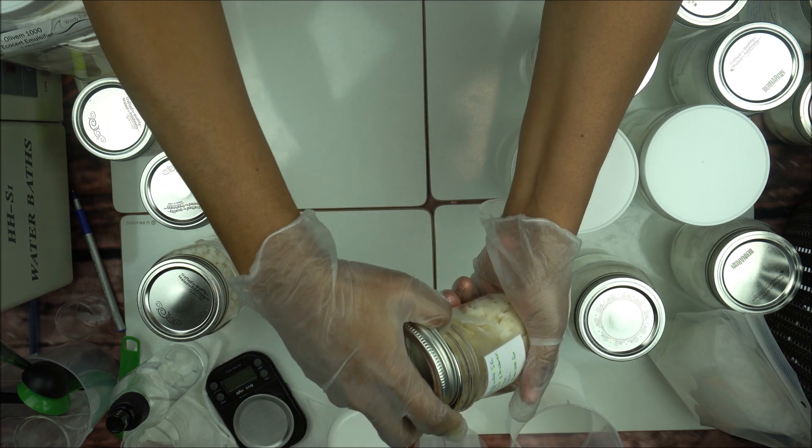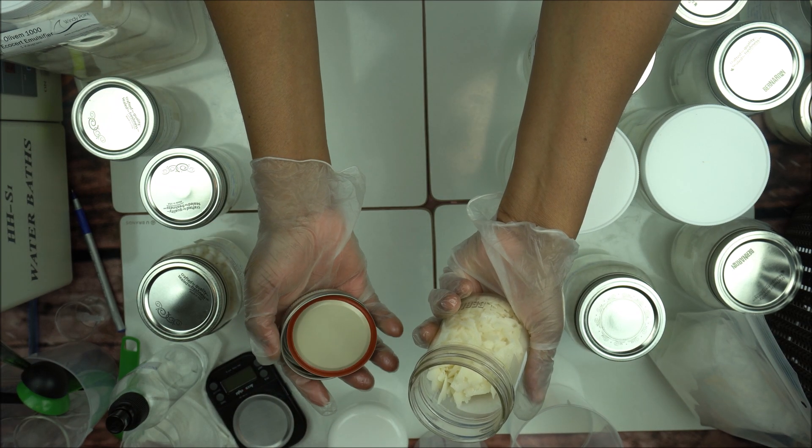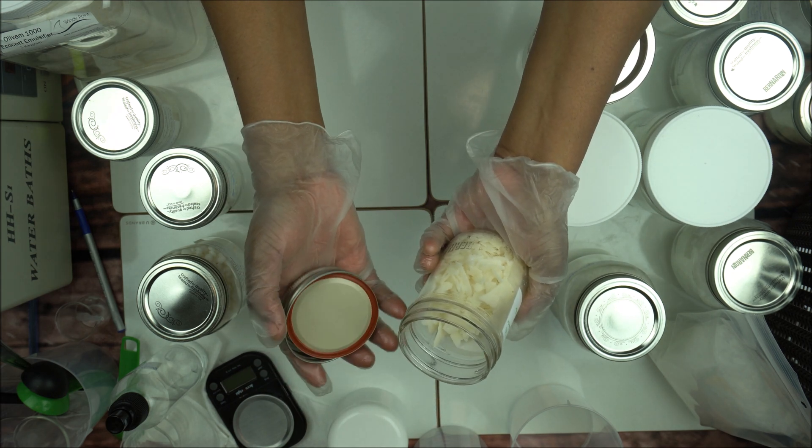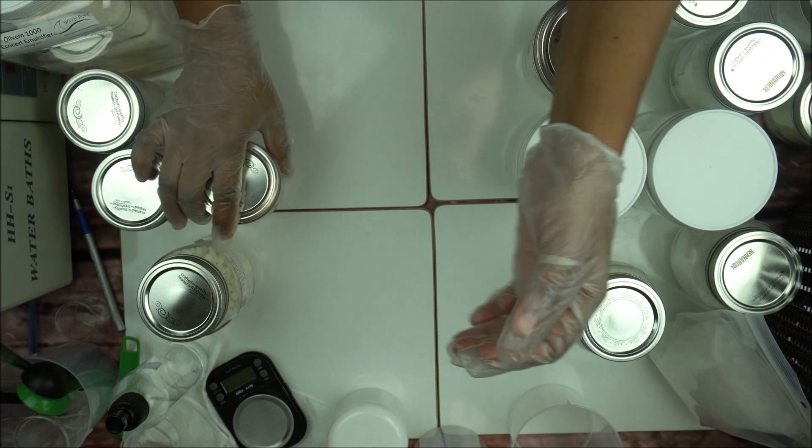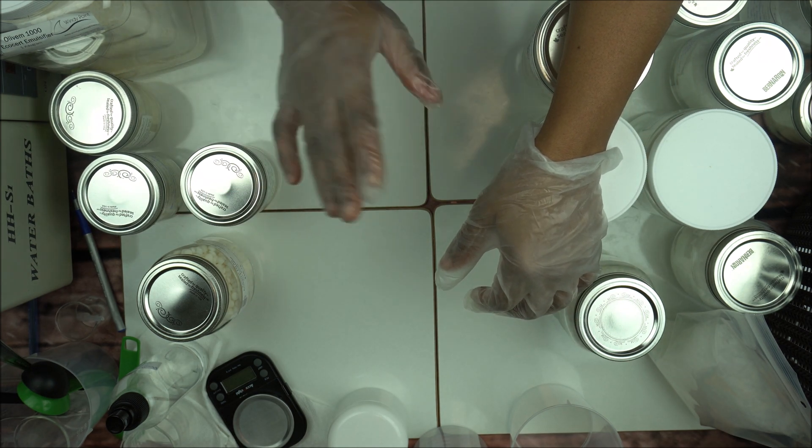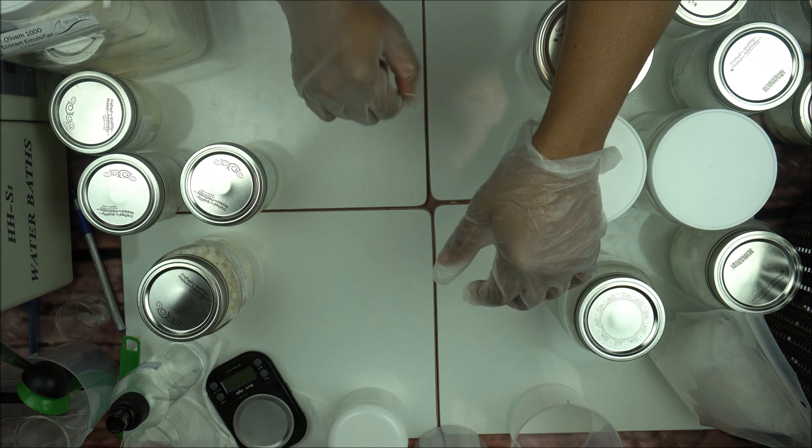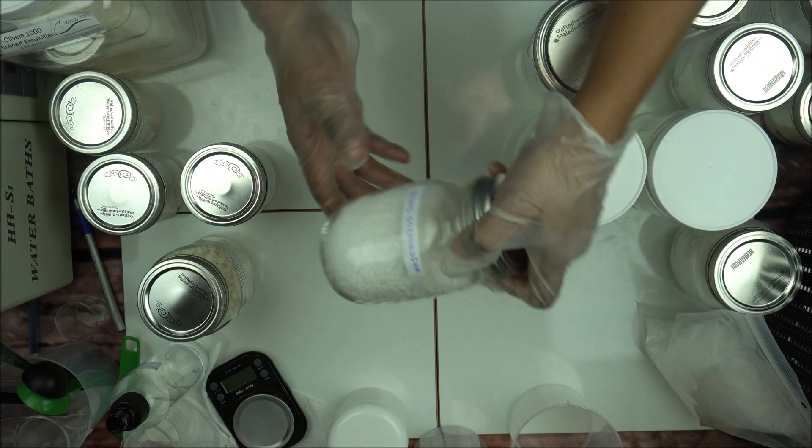In flakes form, this is how it looks. That's about it for glycerin stearate. You can use it as a co-emulsifier, you cannot use it as a primary emulsifier.